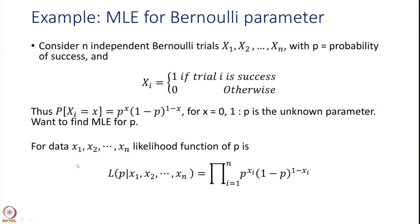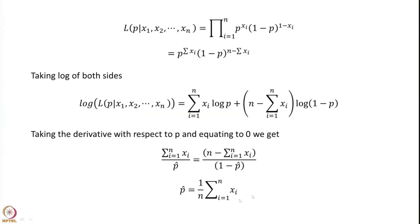We want to find the maximum likelihood estimator of the unknown parameter p. We must first find the likelihood function of p, which is the joint density of x1, x2, ..., xn — found by simply multiplying the densities because they are all independent and identically distributed. We get the likelihood function of p as a product of p to the power xi multiplied by (1 minus p) to the power (1 minus xi), which simplifies to p to the power (summation of xi) multiplied by (1 minus p) to the power (n minus summation of xi).